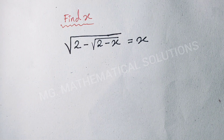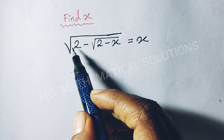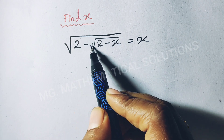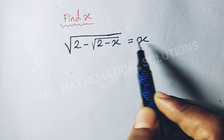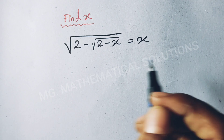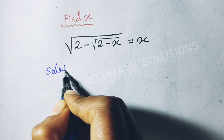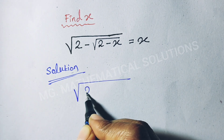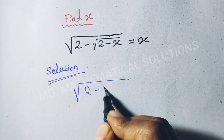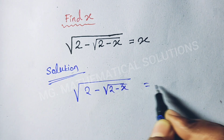Hi students. Today's question is: find x of the equation root under 2 minus root under 2 minus x, equal to x. Let's see how to solve. We start with the equation: root under (2 minus root under (2 minus x)) equal to x.